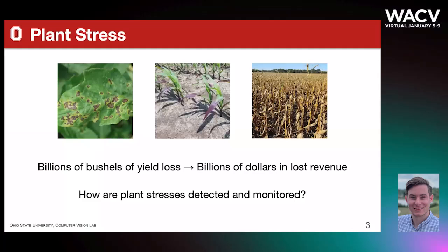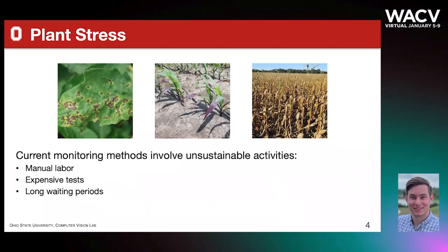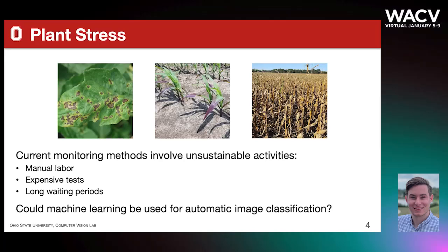So how are these plant stresses monitored? Current methods for monitoring plant stresses are unsustainable, typically involving human experts and time. Is it possible that image-based machine learning could aid in detecting these stresses in an effective and timely manner?